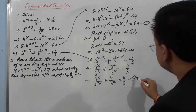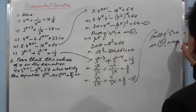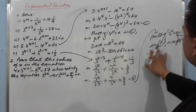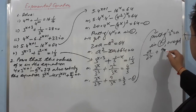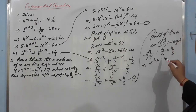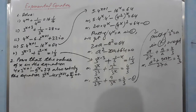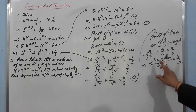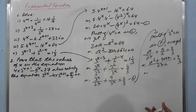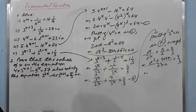Putting 3^x = a, we get a/27 + 9/a = 4/3. Multiplying through: (a² + 243)/(27a) = 4/3. Cross multiply, then you will get a quadratic equation. Factorize by splitting the middle term, and finally you can get the values of x, just as done in the first question.